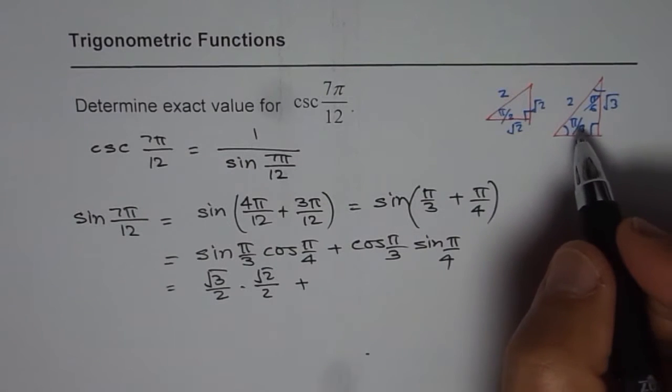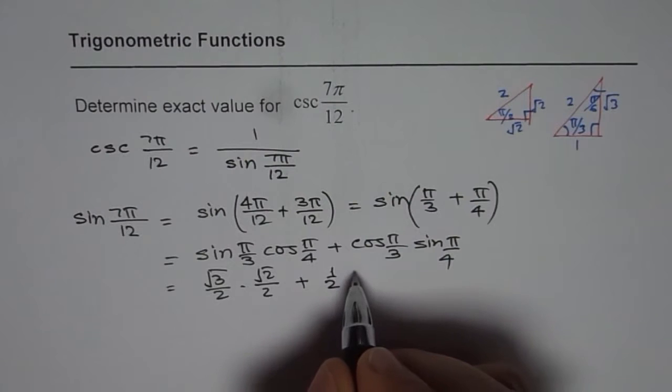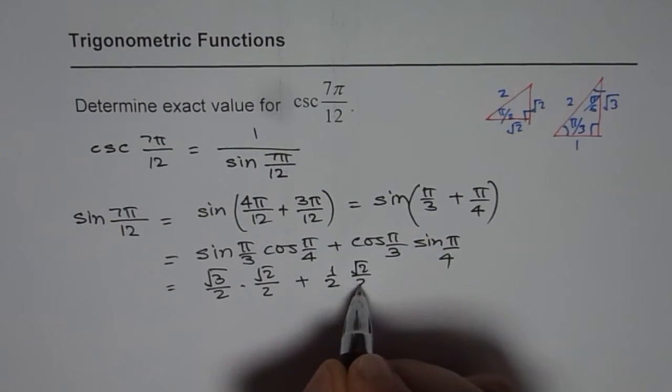Cos of pi by 3 will be 1 over 2. Sine pi by 4 will be square root 2 over 2.